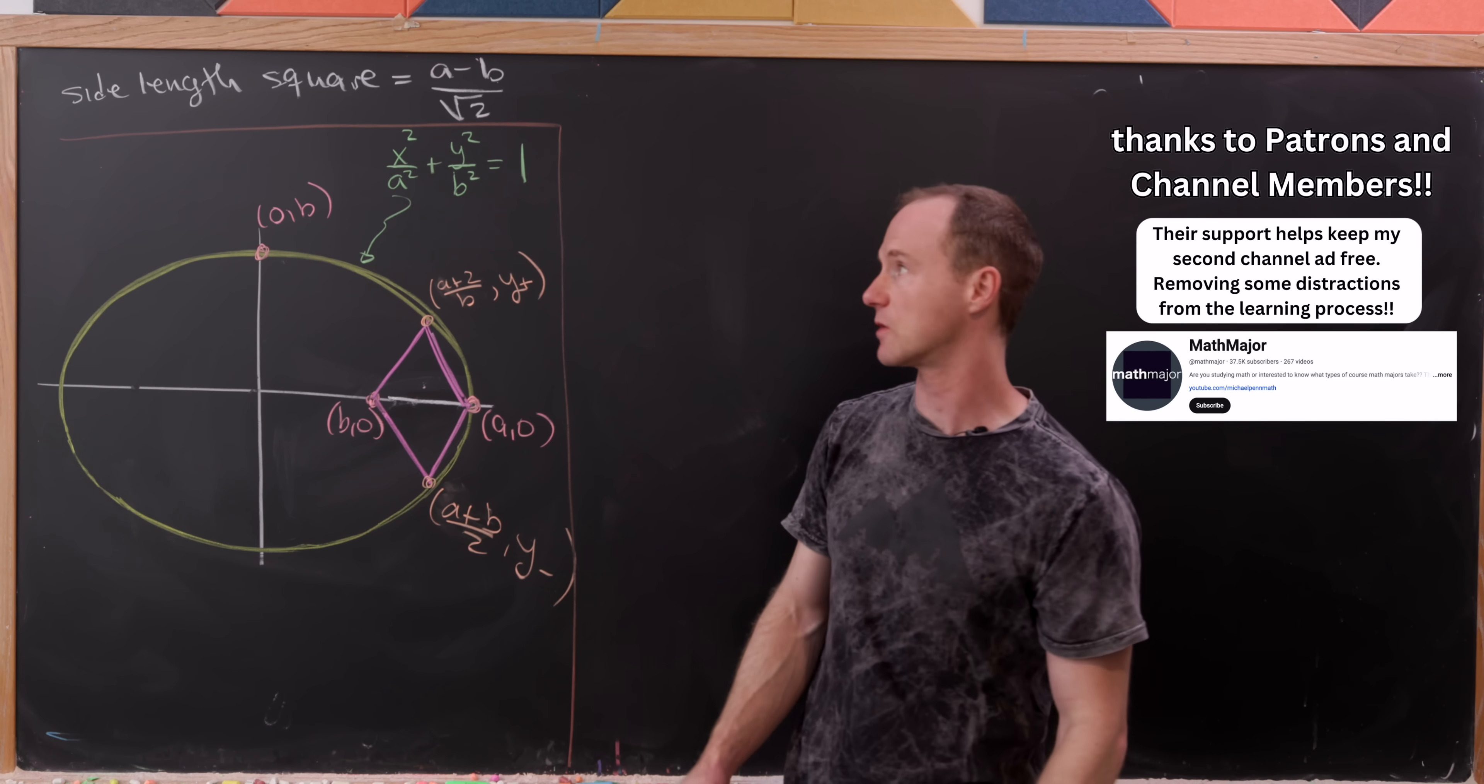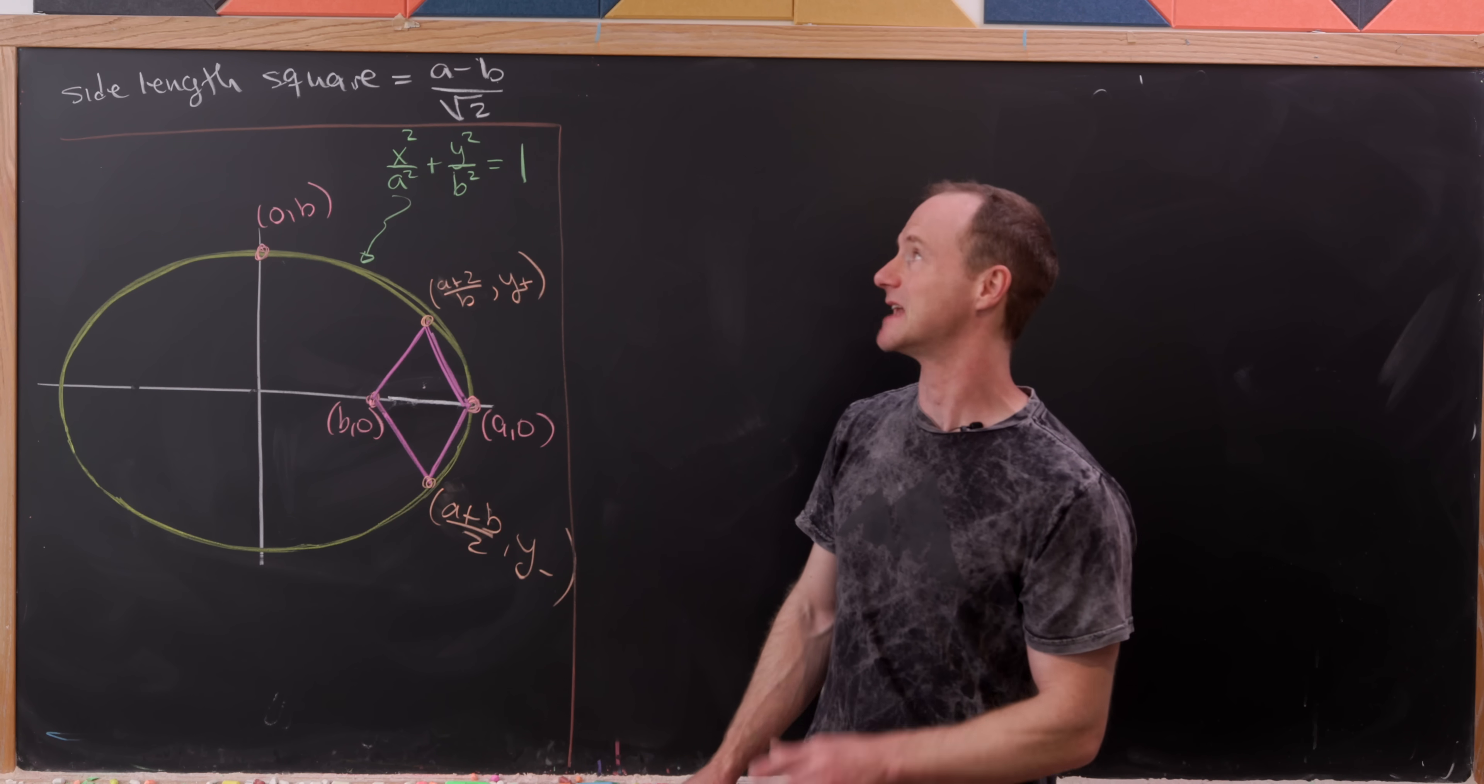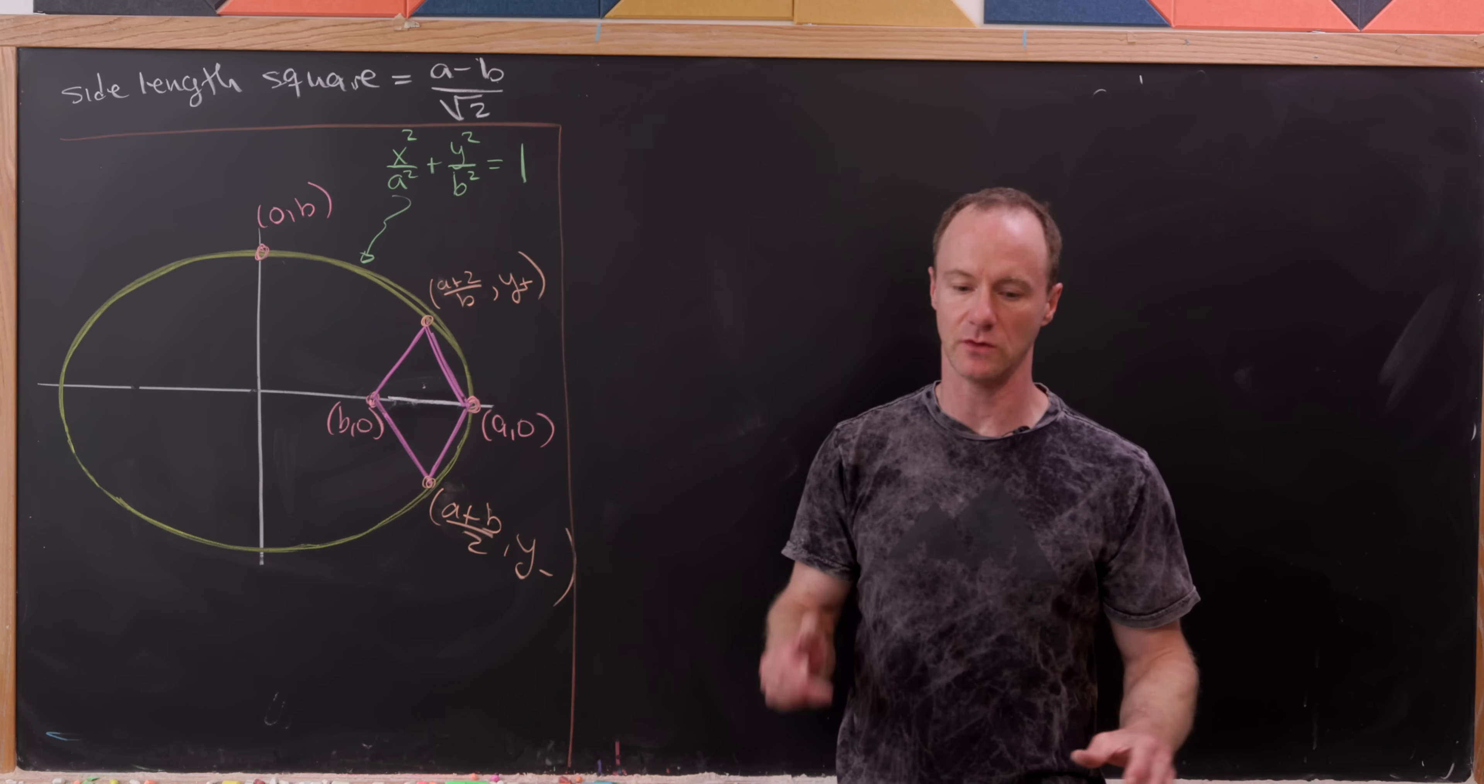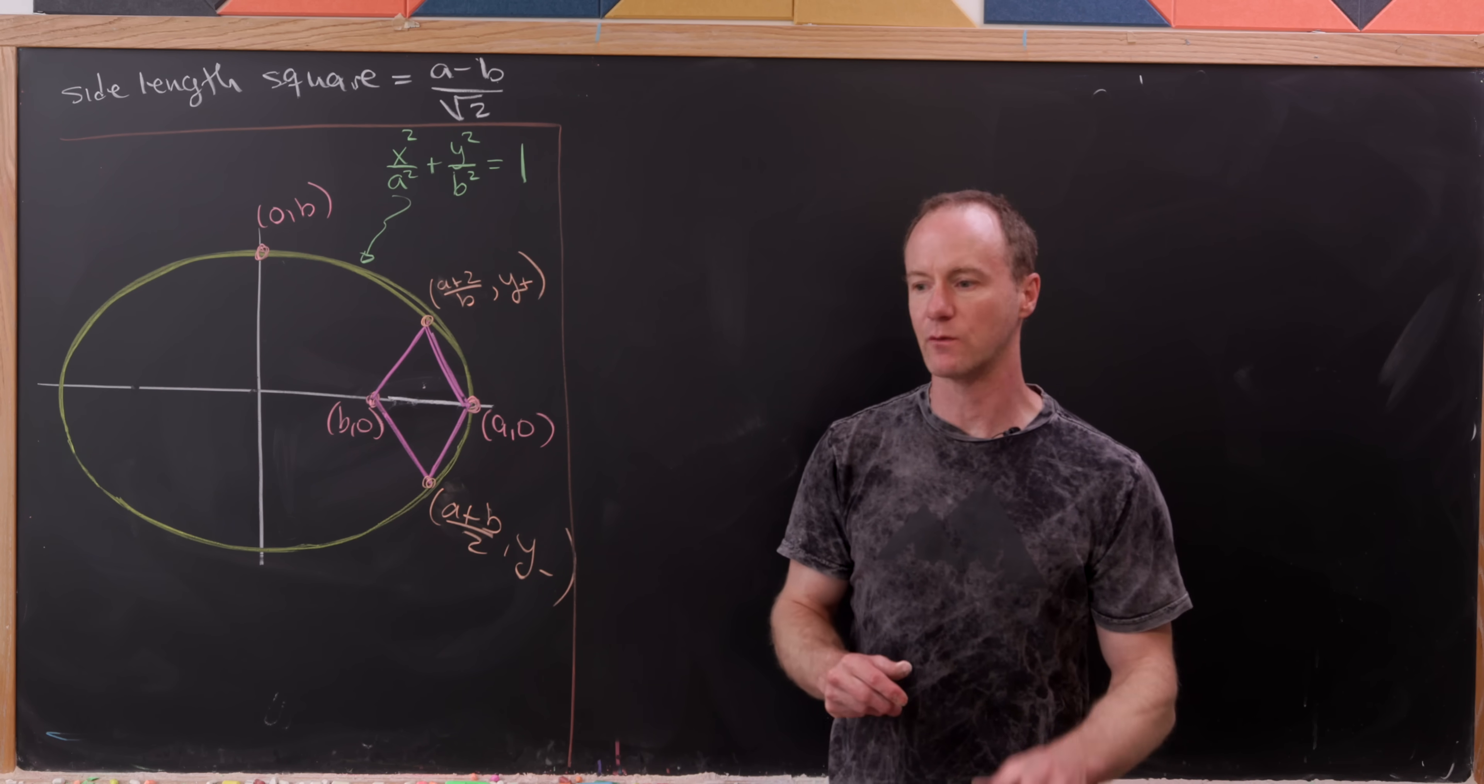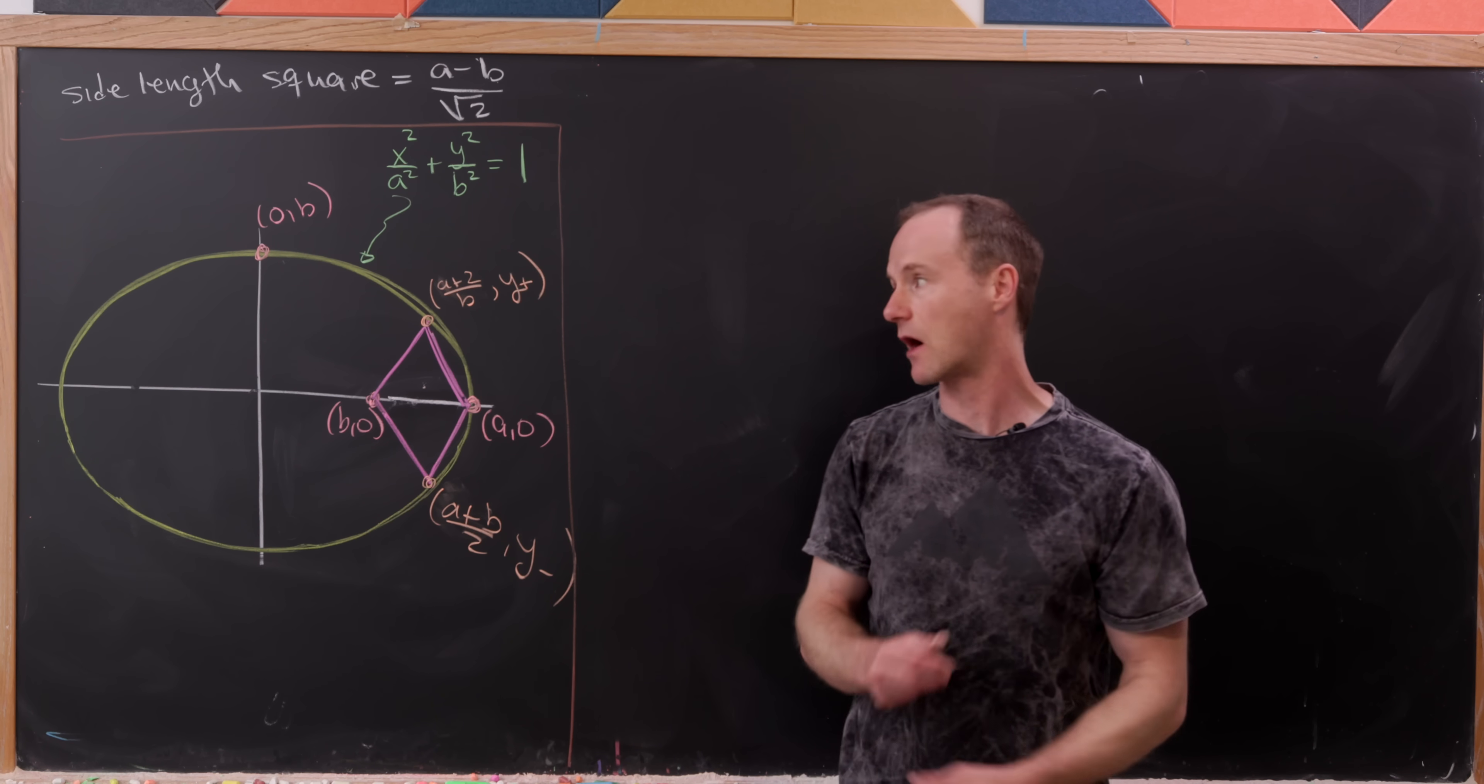So far we've determined that the side length of the square in question is (A minus B) over root 2, where those numbers A and B were related to the major and the minor axes of our ellipse.